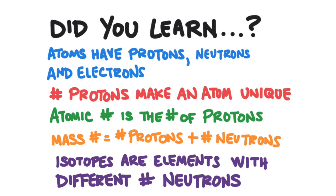So did you learn everything in this lesson? If you did, you learned that an atom is composed of protons, neutrons, and electrons. The number of protons is what makes an atom unique from another atom, but atoms can gain or lose electrons. The atomic number is the number of protons in the nucleus of an atom, and the mass number is the number of protons plus the number of neutrons. Isotopes are atoms with the same number of protons but a different number of neutrons.